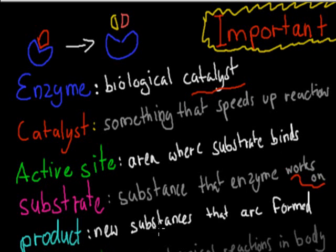So works on is probably better than break down. Product is new substances that are formed. So here we've got the picture here. We've got the enzyme, which might be the thing in blue. That's the enzyme. Substrate, the thing that's being worked on, is that thing in red here. The active site is where it's binding to. So this part here, that part that it's binding to, that might be the active site.